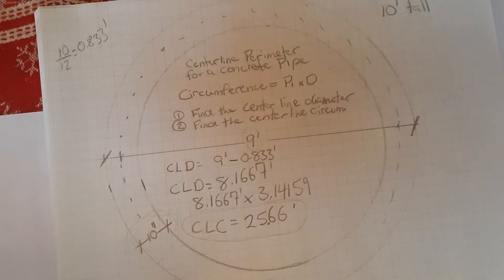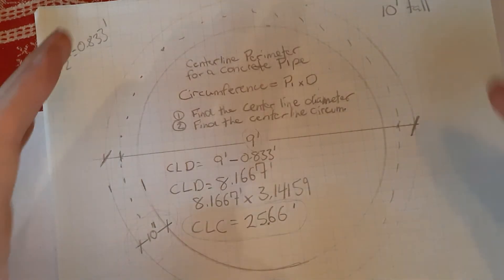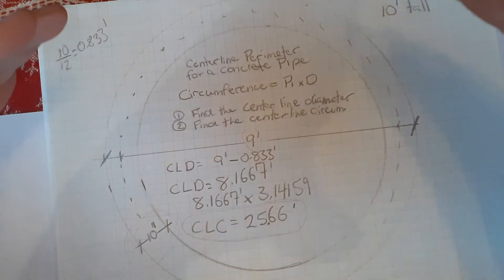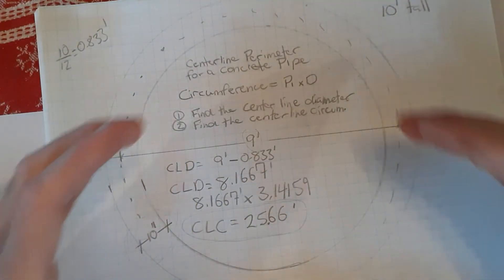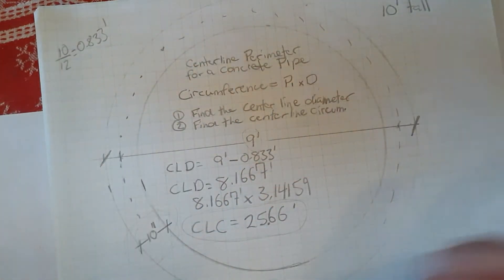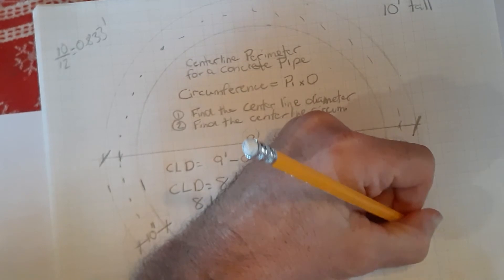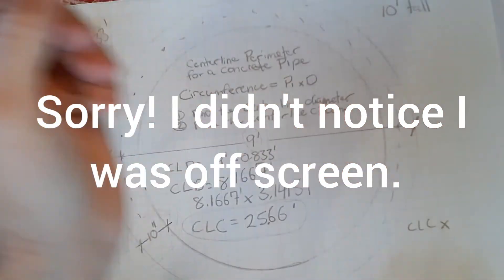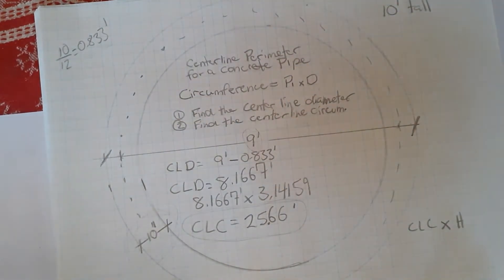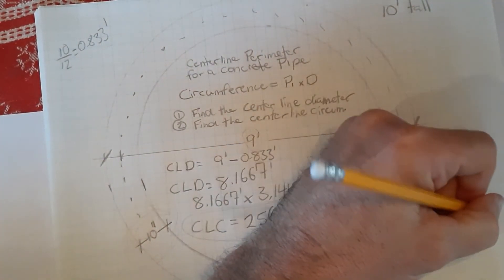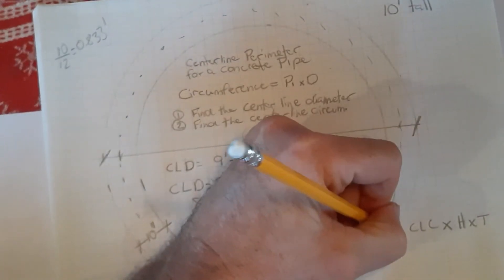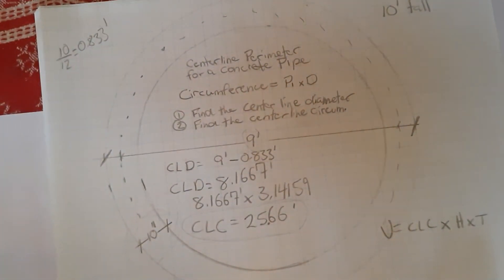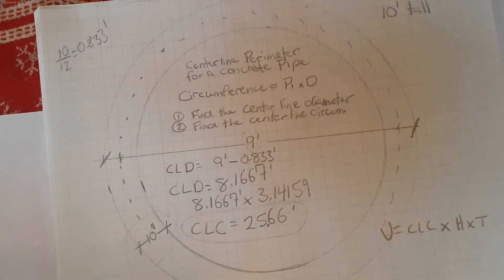Now we want to figure out volume of this. The whole idea of starting this is to figure out how much concrete was required. Remember we did our first example—we found the volume of the entire cylinder, then we found the volume of the inner cylinder, and we subtracted the inner from the outer to get the volume that remains. Well this time around we can do it much simpler. We can take our center line circumference, multiply that by the height of the pipe and multiply it by the wall thickness of the pipe, and that is going to give you your volume. A very streamlined process from what we are used to.